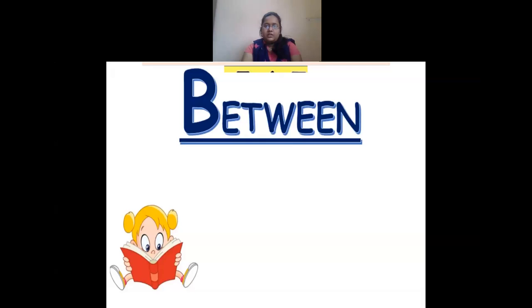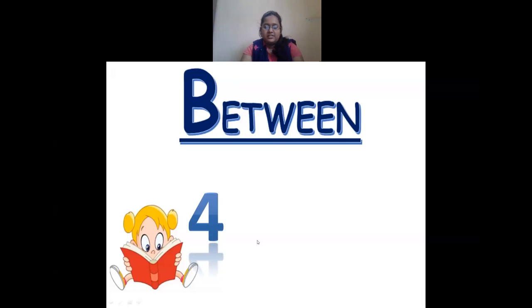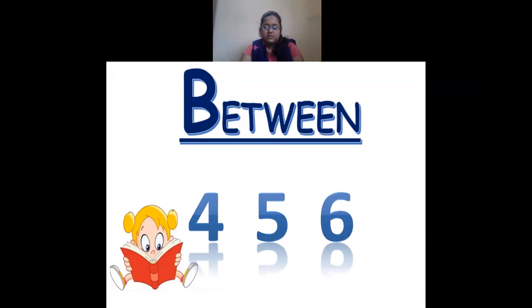Then we have something called between. What is the meaning of between two numbers? Here I have a set of three numbers: 4, 5, and 6. Between means the number that comes in the middle of two numbers. Here I have 4 and 6, and in the middle is 5. So 5 is the number between 4 and 6.